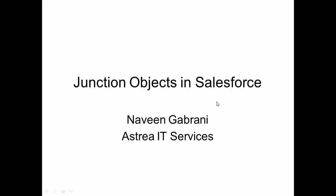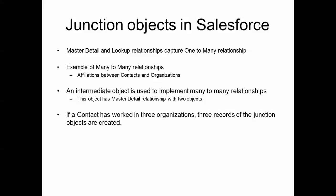Junction objects are an important concept in Salesforce. The standard relationships that exist in Salesforce, like master-detail and lookup, capture a one-to-many relationship. For example, one account has many contacts, or one account has many donations.